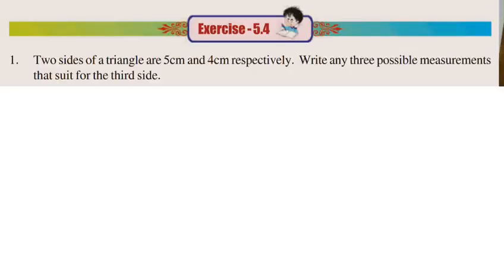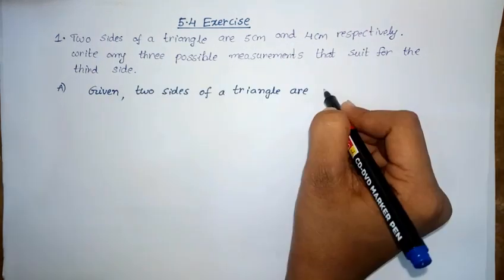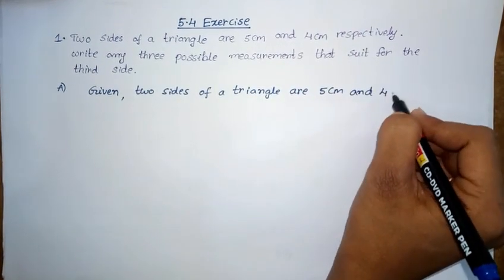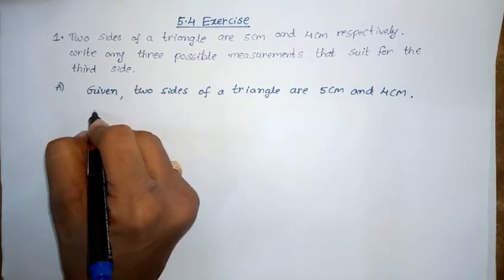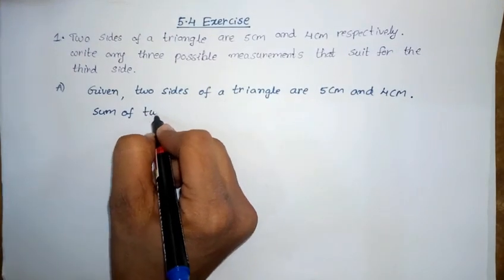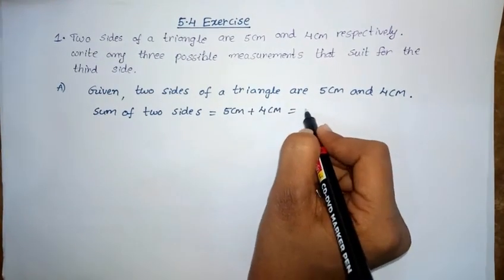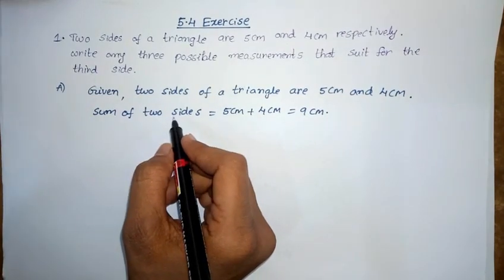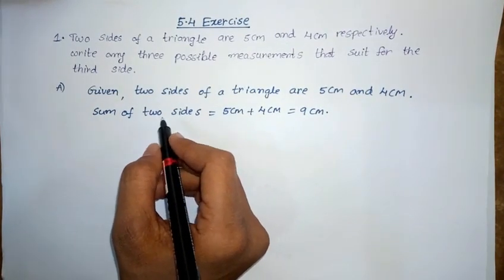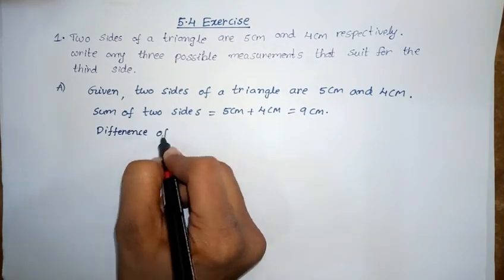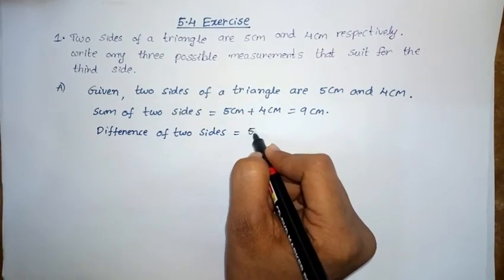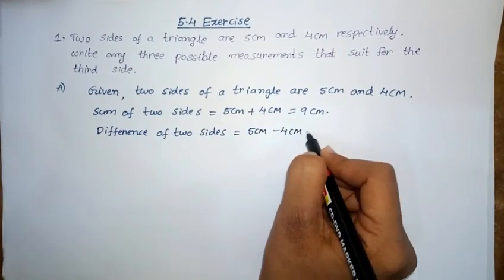First problem: two sides of a triangle are 5 cm and 4 cm respectively. Write any three possible measurements for the third side. Given: two sides of a triangle are 5 cm and 4 cm. Find the sum of two sides: 5 cm plus 4 cm equals 9 cm. Also find the difference of the two sides: 5 cm minus 4 cm equals 1 cm.